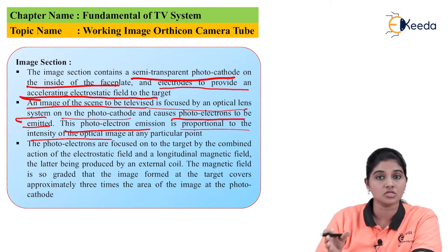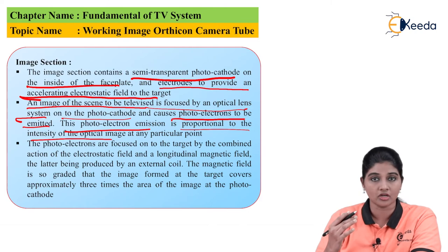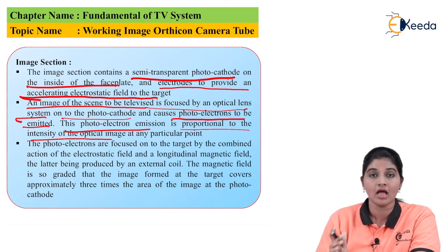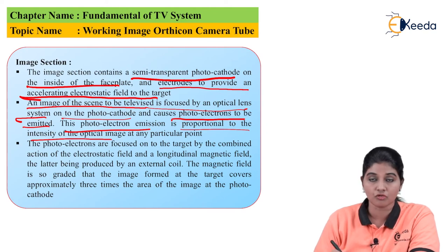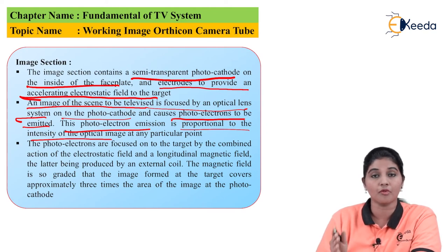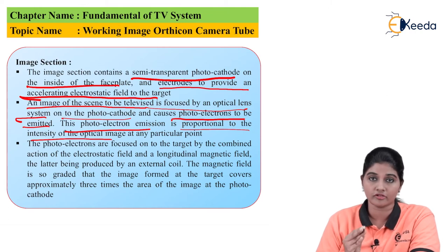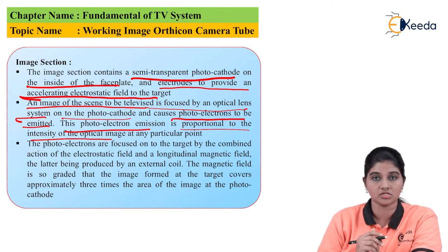The photo emission principle means electrons acquire energy from photons and travel from the valence band to the conduction band, finally getting emitted due to the additional energy provided by the incident light. The photoelectron emission depends upon the intensity of the image — if the intensity is less, fewer photoelectrons are emitted, and if the intensity is more, more photoelectrons are emitted.